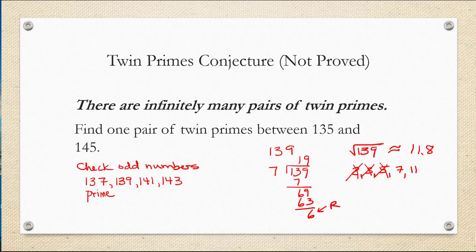7 doesn't divide evenly into 139, and neither does 11. So we know that 139 is a prime as well. This means that we have found a pair of twin primes between 135 and 145.